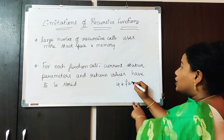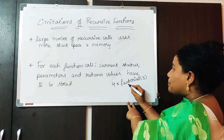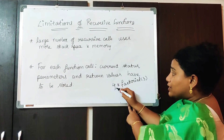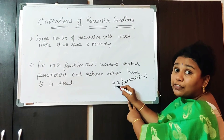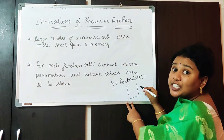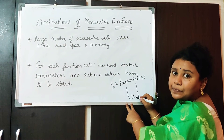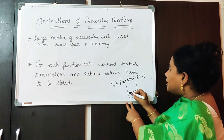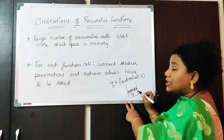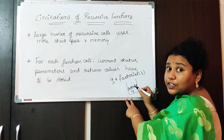4 into factorial of 4 minus 1 is 3. So what is happening? You are going to another function call. What about this value 4? It should not be forgotten by the system. So what the system does is, it will take the concept of stacks, a data structure, and it will place 4 in that stack. And then it will place factorial of 3 above in the stack.